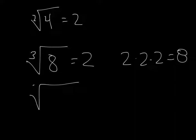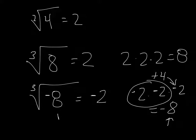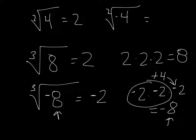What is the cube root of negative 8? The answer is negative 2, because negative 2 times negative 2 times negative 2 equals negative 8. The first two negatives give positive 4, and positive 4 times negative 2 gives negative 8. So cube roots can have a negative under the radical sign, whereas the square root of negative 4 leads to imaginary numbers, which we won't cover here.